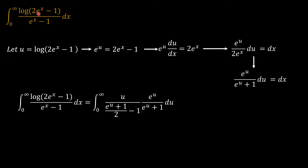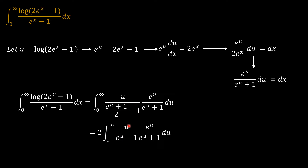In the transformed integral, in place of ln(2e^x minus 1) we have u, and in place of e^x minus 1 we have (e^u plus 1)/2 minus 1. We then have e^u over (e^u plus 1) du as the differential factor. Combining these, we obtain a product of two expressions that simplifies the integrand.